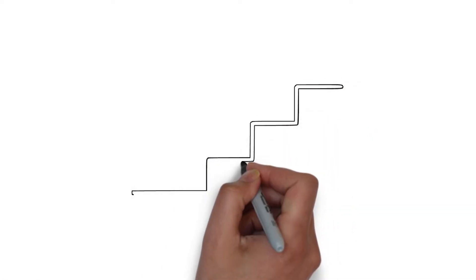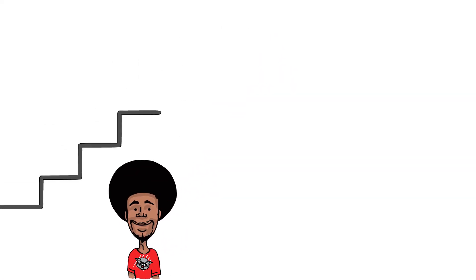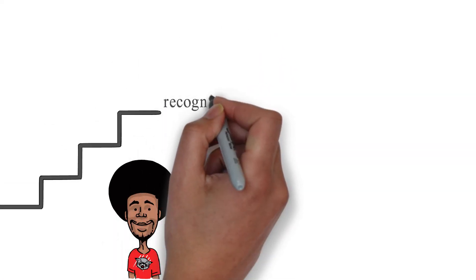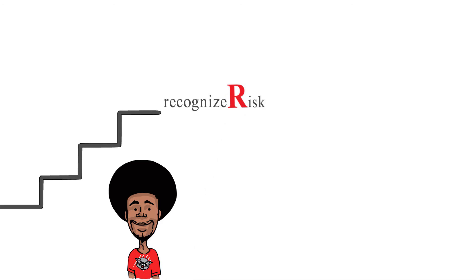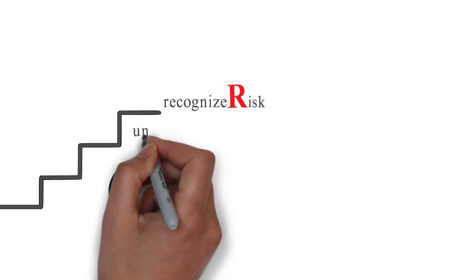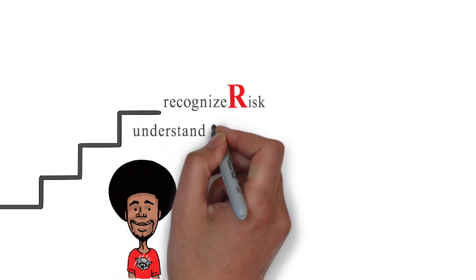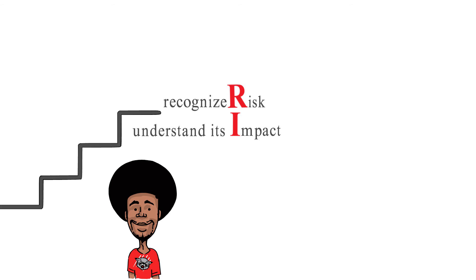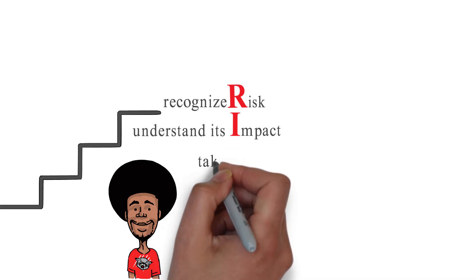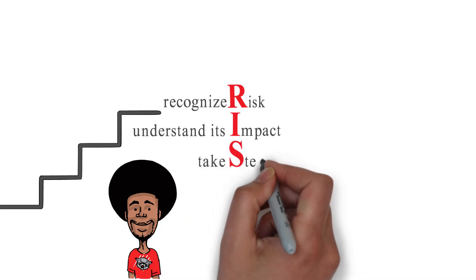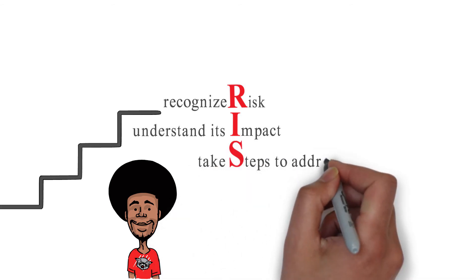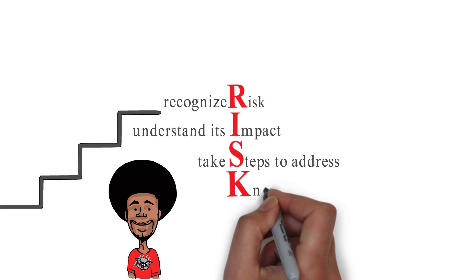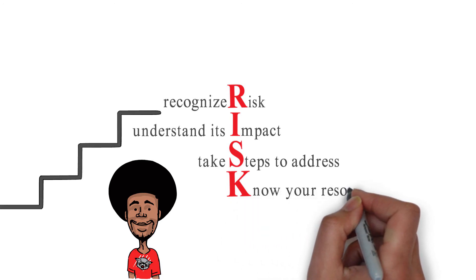The steps are very simple, and you might be surprised that you do them already. Recognize risk or opportunity in your day-to-day work or environment. Investigate the impact of that risk or opportunity to the university community. Start taking steps to manage the risk or opportunity. And know who to go to for help.